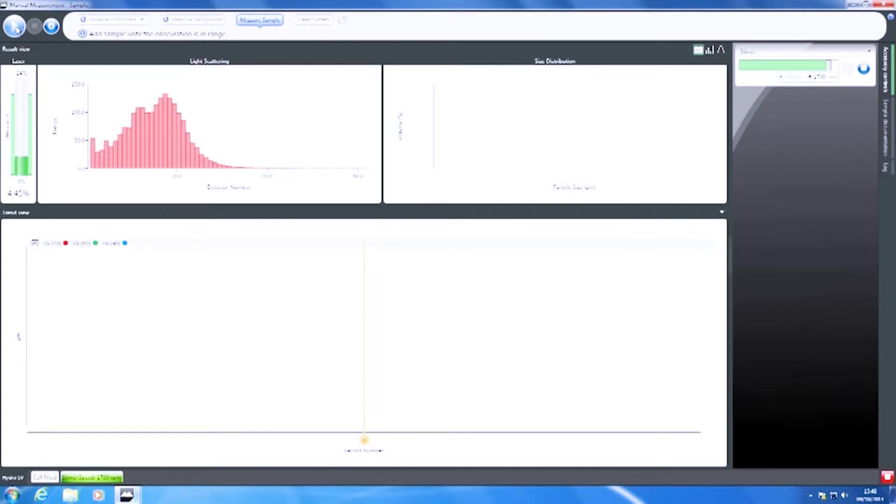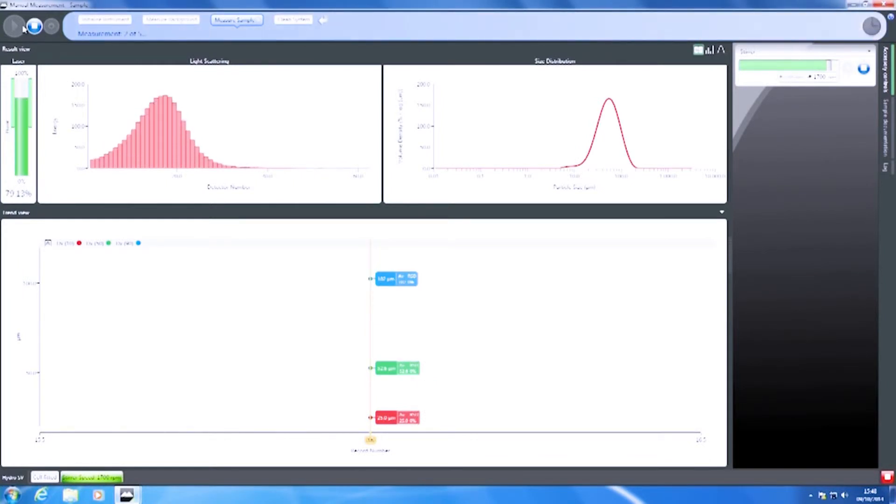And we're going to add some sample until we get the right kind of obscuration range. So, just drop a little bit more in. There we go. And then we'll start the measurement on the Mastersizer 3000, and I've set it up to do a few repeat measurements. That will let us make sure that the sample is nicely dispersed, that the results are stable, and we're suspending all the particles in the sample.